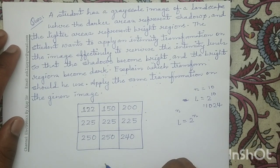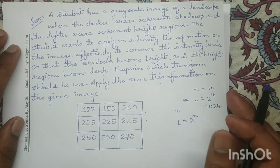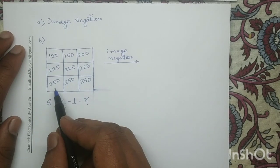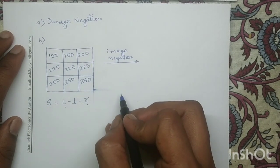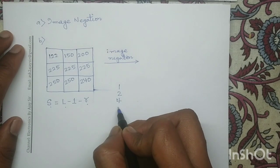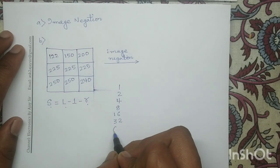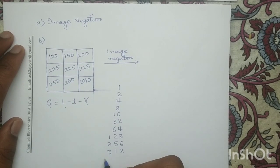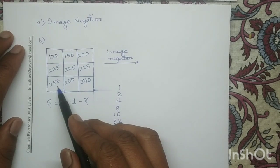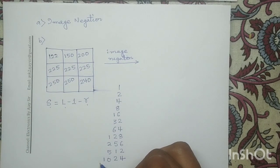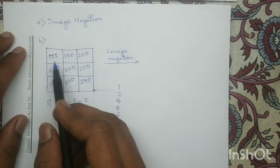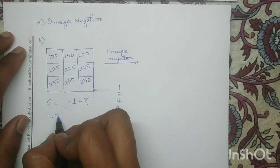Since the number of bits of this given input digital image is not given to us, in order to determine the value of L, we have to target the maximum value of the given input digital image. The maximum value is 250. We compare 250 with the 2 to the power n series and identify the next term. After 250, the next 2 to the power n term is 256. So the L value for this digital image is L equals 256.